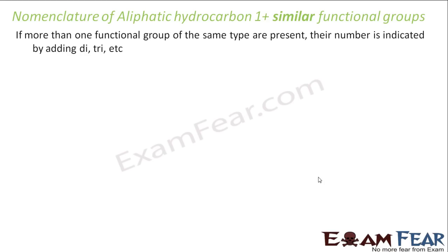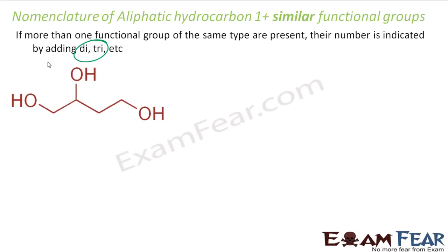If there are more than one functional groups of the same type, the number is indicated by di and tri. So if we have 2 alcohols or 2 aldehydes, the number is represented by di and tri. For example, we have 3 alcohol groups on a 4-carbon chain. Numbering 1, 2, 3, 4 gives positions 1, 2, and 4 for the OH groups — sum = 1+2+4 = 7.